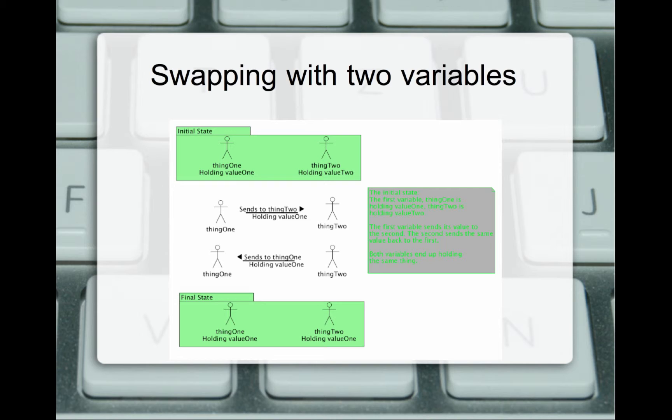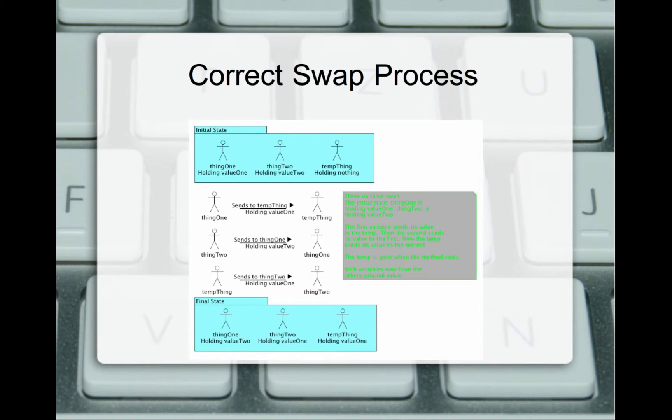Because we lost data, we have to use a separate thing. This is where our third one comes in. We have thing one, thing two, and temp thing. Temp thing is going to hold nothing, and it's only going to exist inside the method. Thing one is going to send to temp thing value one. Now temp thing is holding value one, and so is thing one.